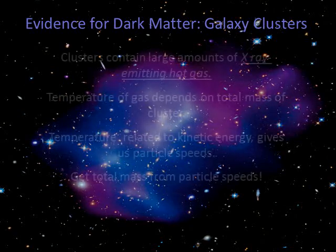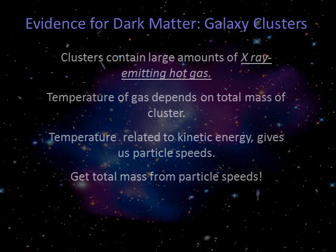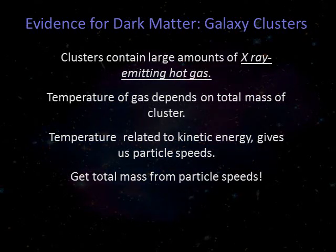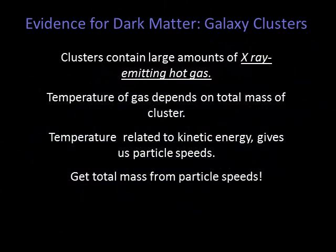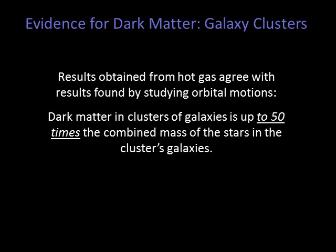Hot gas within galaxy clusters offers more evidence for the existence of dark matter. Within galaxies in a cluster, there is often hot X-ray emitting gas — there can be a lot of it, up to 7 times as much mass in the form of gas compared to stars. We can measure the temperature of the gas, and since temperature is related to the movement of the gas particles, we can calculate the velocity of the particles. From the velocities, we can calculate the total mass of a cluster. The results from hot gas agree with results found from orbital motions — dark matter in clusters is up to 50 times the combined mass of the stars in the cluster's galaxies.